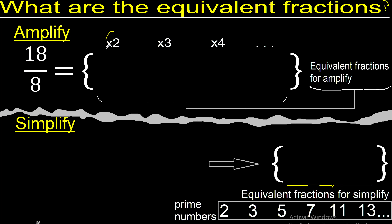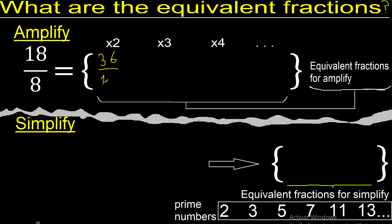First, multiply by 2. 18 times 2 is 36. 8 times 2 is 16. Now, multiply by 3.